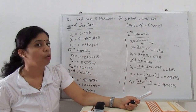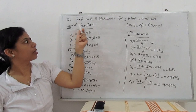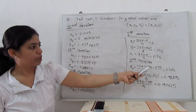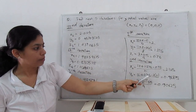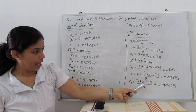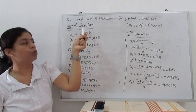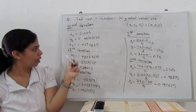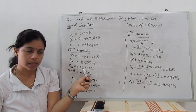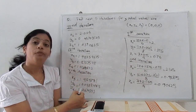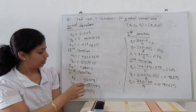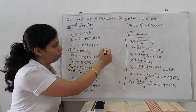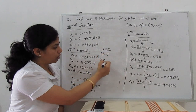Similarly, for the third iteration we use x₂, y₂, z₂ substituted into the formulas to get x₃, y₃, z₃. These values are then used for the fourth iteration, and those results for the fifth iteration. After the fifth iteration, we observe that the values converge to x = 2, y = 1, and z = 1.